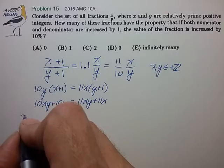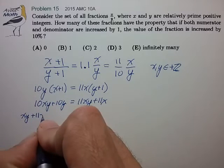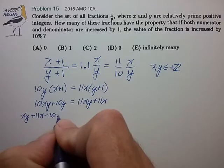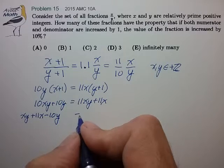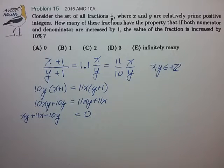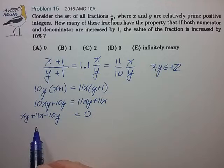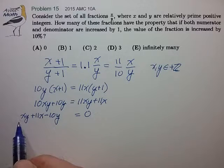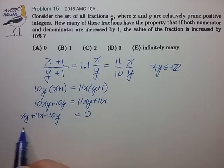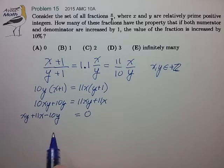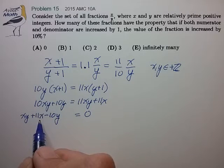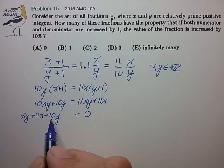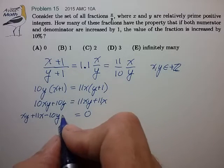And that'll give us xy plus 11x minus 10y minus 110 equals 0. You should recognize this as our most common integer equation form in the AMC. Our method for solution is to identify the coefficients of x and y, 10 minus 11, multiply them together, and add them to both sides.